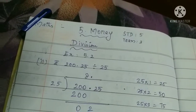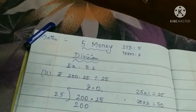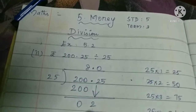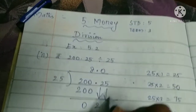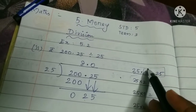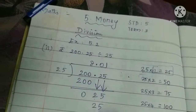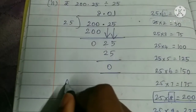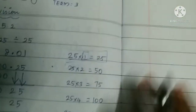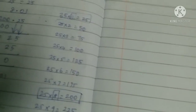We cannot divide 2 by 25. When you can't divide a number, you have to put a 0 here. Now we take the next number: 25. We can divide — 25 goes into 25 exactly 1 time. Write 1 here. 1 into 25 is 25. When we subtract, we get 0. Therefore the answer is 8.01.